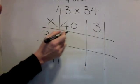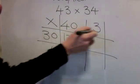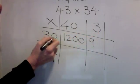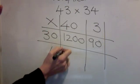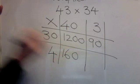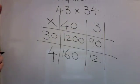3 times 4 is 12, one, two zeros. 3 times 3 is 9, one, zero. 4 times 4 is 16, one, zero. 4 times 3 is 12, no zeros.